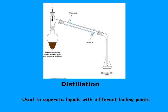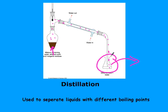Distillation separates liquids of different boiling points. We heat the liquid; the first substance that boils off goes up, condenses, and collects in a separate flask. Once the temperature rises again, we know that substance has all boiled off and we replace the flask. Each sample is collected while the boiling point is constant, because boiling point stays constant until all of that substance is boiled away.